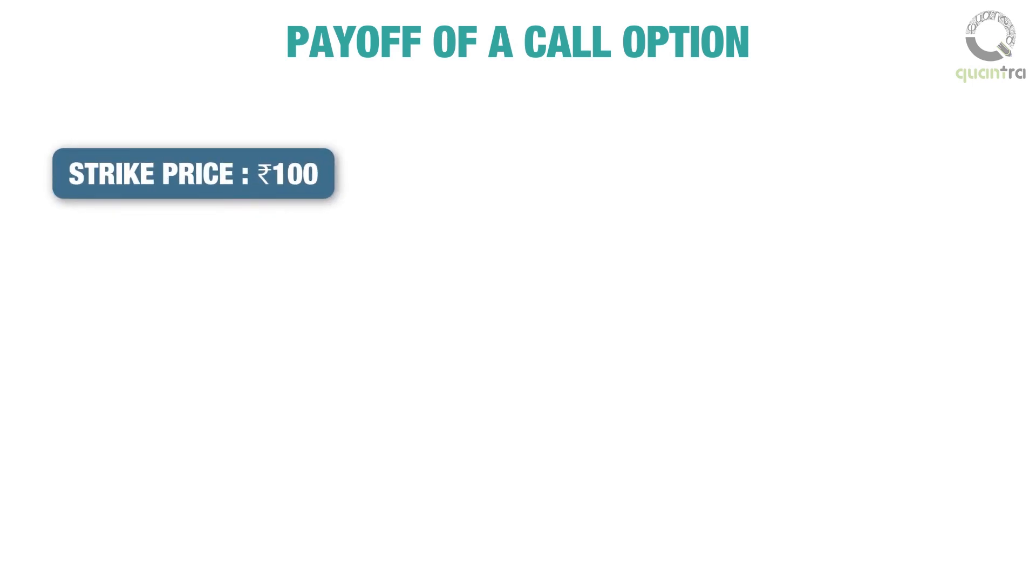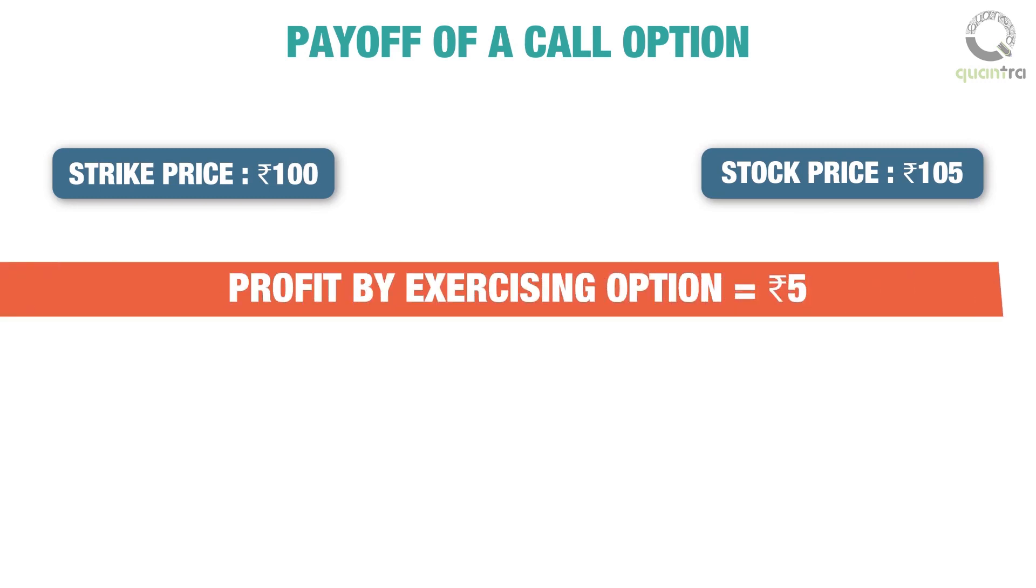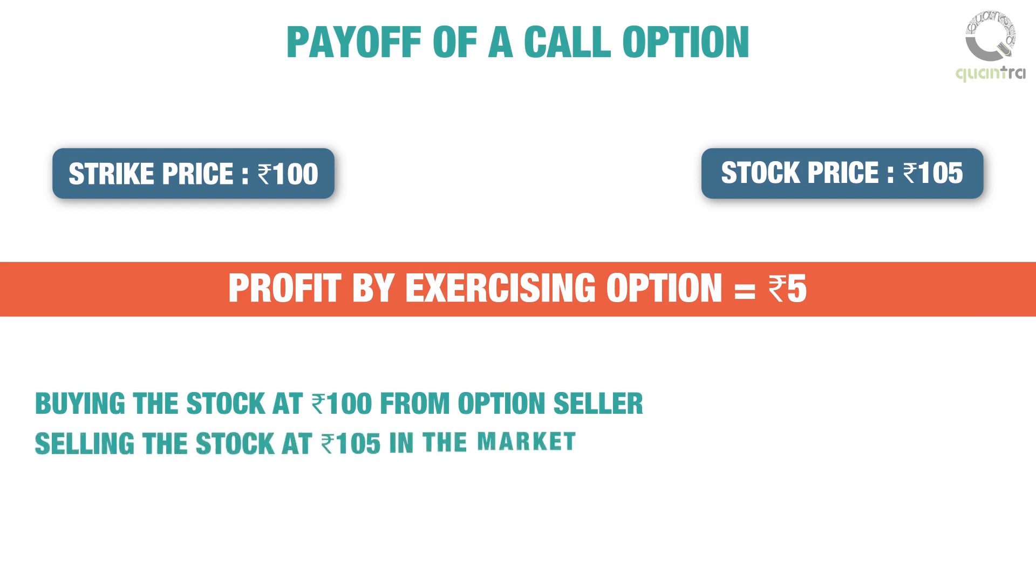Suppose the strike price is 100 rupees and the stock price is 105 rupees. Therefore, the profit by exercising the option is 5 rupees, gained by buying the stock at 100 rupees from the option seller and selling it at 105 rupees in the market. In other words, when we buy a call option, we pay the strike price and receive the stock price.